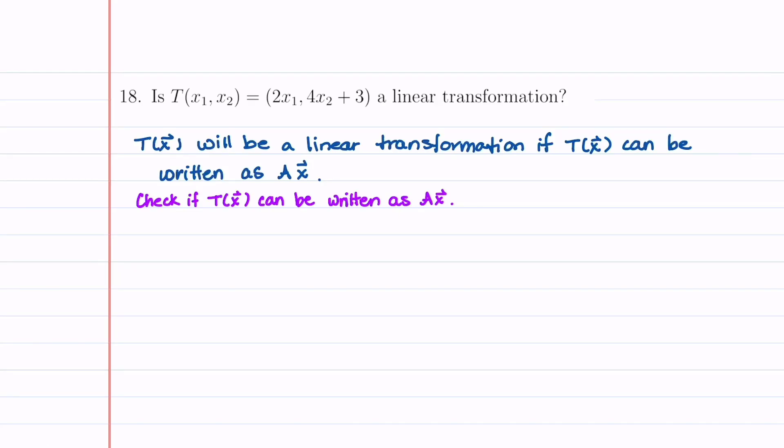Welcome to Understand the Math. In this problem, we're given that T of x₁, x₂ is equal to the vector 2x₁ and then 4x₂ plus 3. And we're asked to determine if this transformation is a linear transformation.